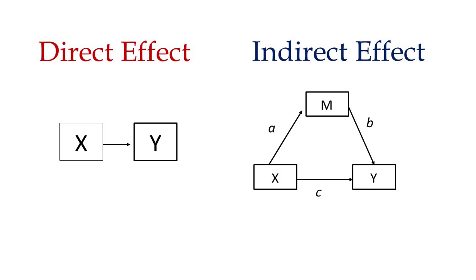When we're looking for indirect effects or testing a mediator, a simple mediation test is usually labeled as an A path, a B path, and a C path. The A path is typically from the independent variable to the mediator, the B path is from the mediator to the dependent variable, and the direct effect from the independent to the dependent variable is typically labeled as the C path. The indirect effect is usually just the A path times the B path.